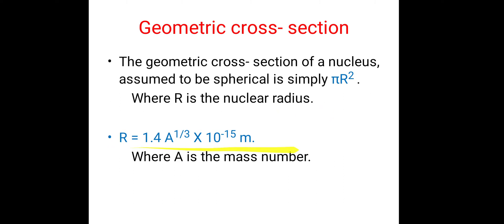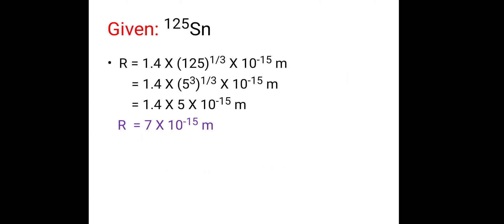The value of r is given by the formula: r = 1.4 × A^(1/3) × 10⁻¹⁵ meters. Here A is the mass number of that nucleus. In this problem we are given Tin-125, and 125 is the mass number of Tin.